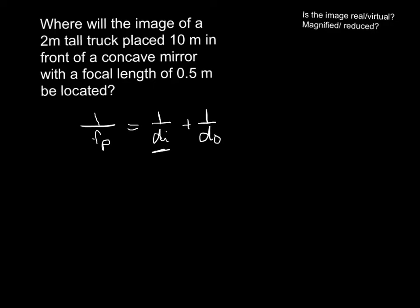We're looking for DI. So our focal point, 1 over 0.5 is equal to, we're looking for DI, so we're going to leave that, plus, okay, so which one? 2 meters or 10 meters is our DO. Since the truck is placed 10 meters in front of the mirror, that's the distance to our object. This is the height of the object. So we're going to use 1 over 10 as our DO.